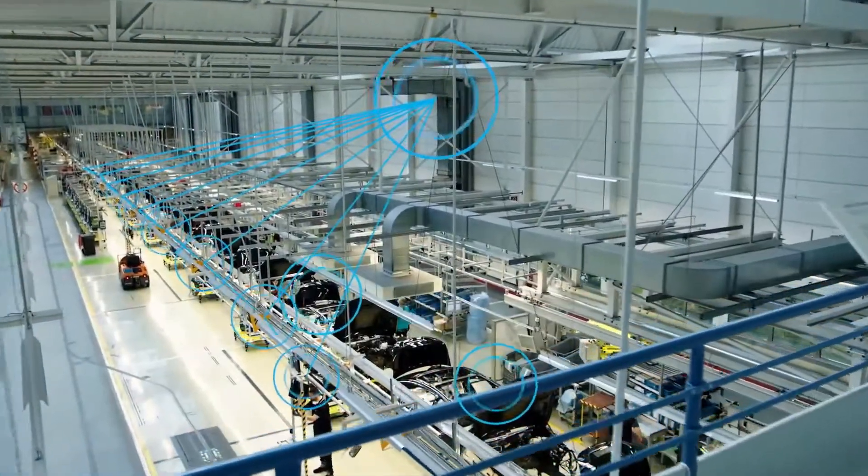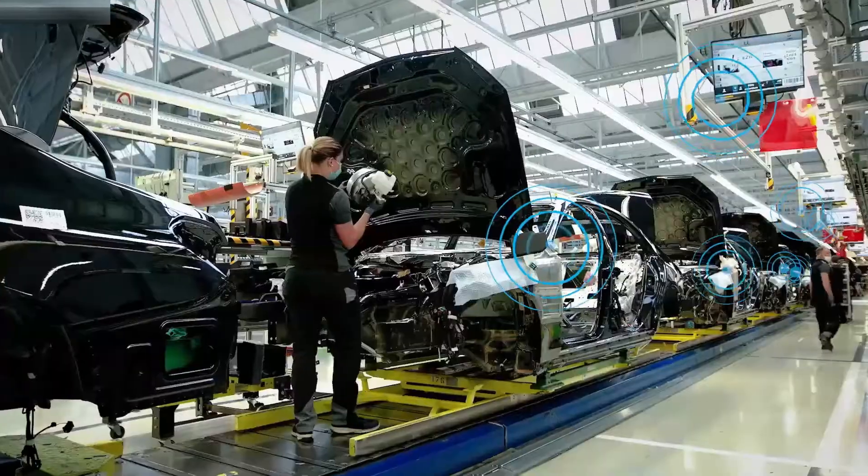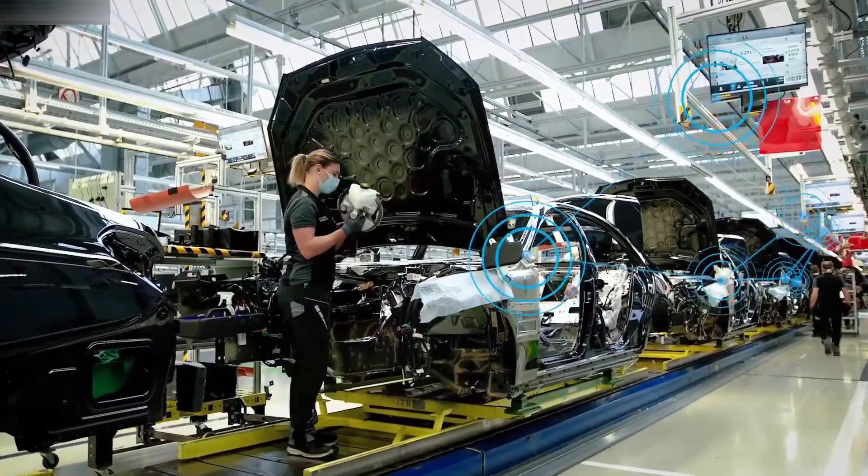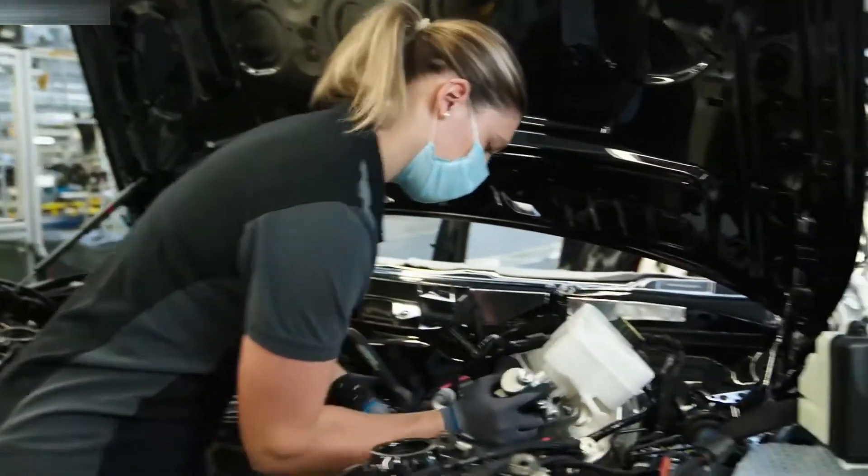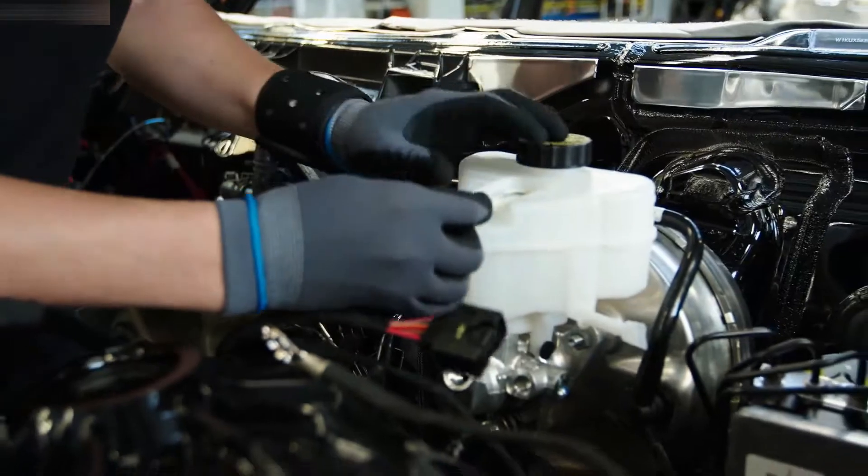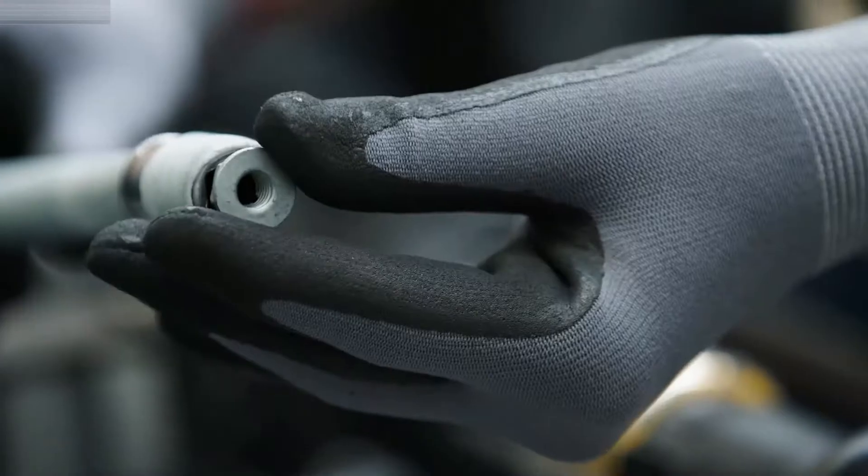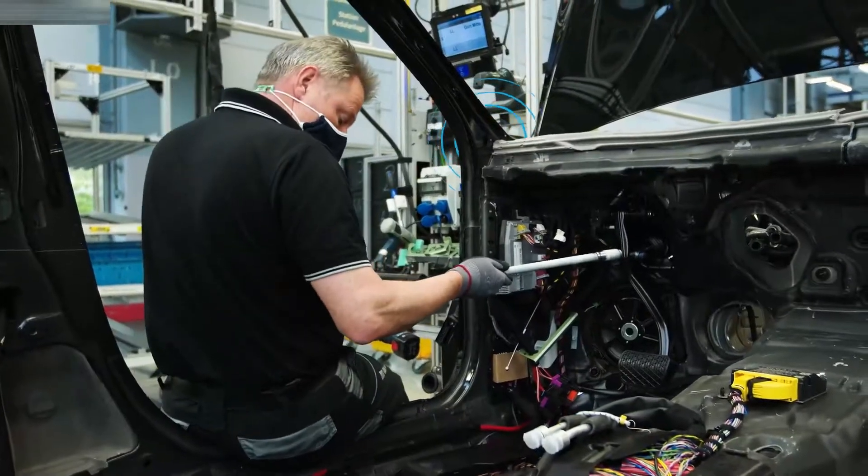In our ultra-modern production, the vehicles are located within the production line with absolute precision. This is the basis for the needs-based information management of the paperless factory. This way, each worker receives exactly the information he needs for his next work step directly at his workplace.